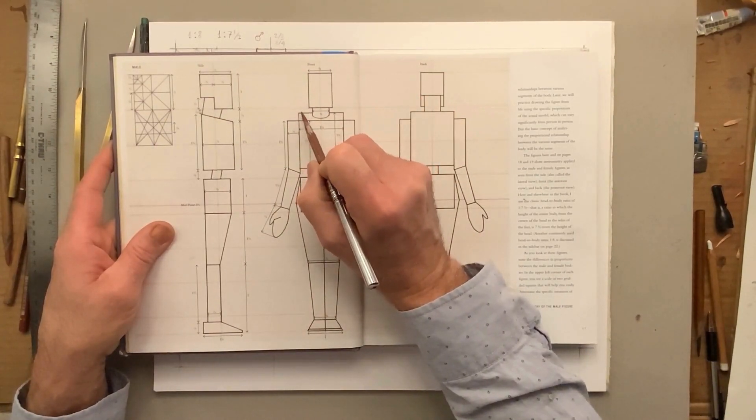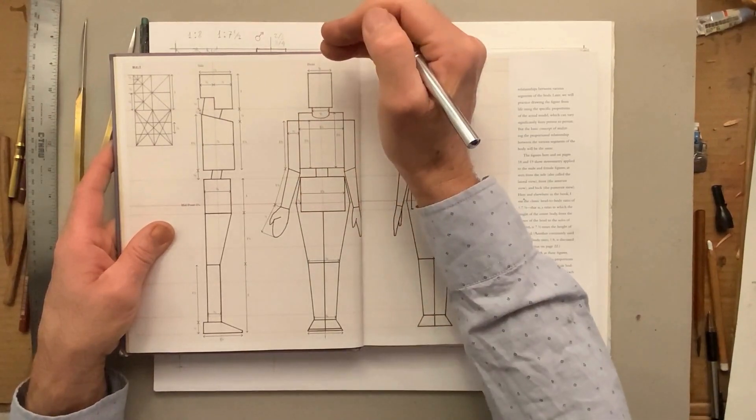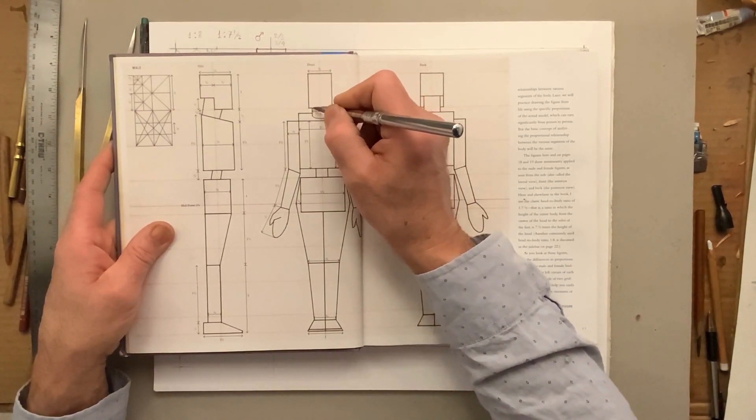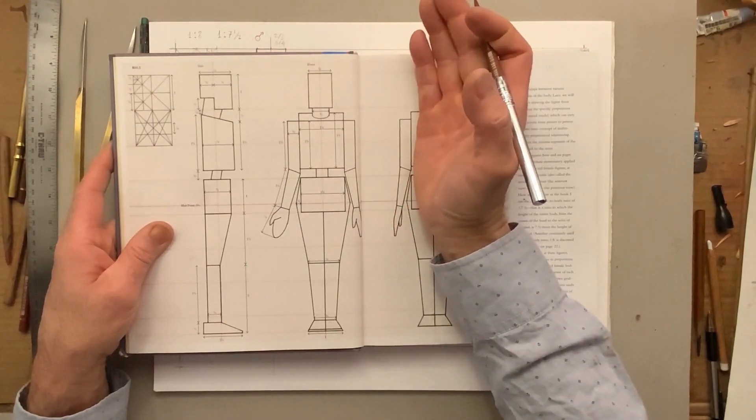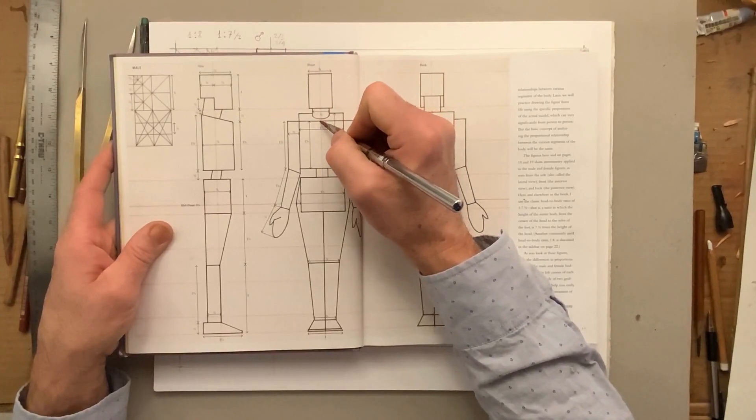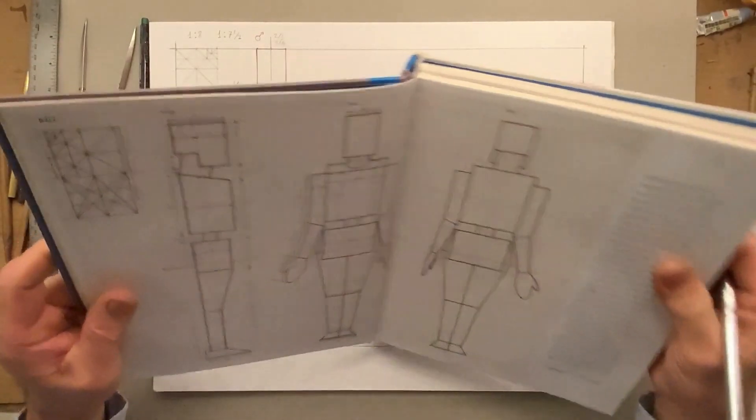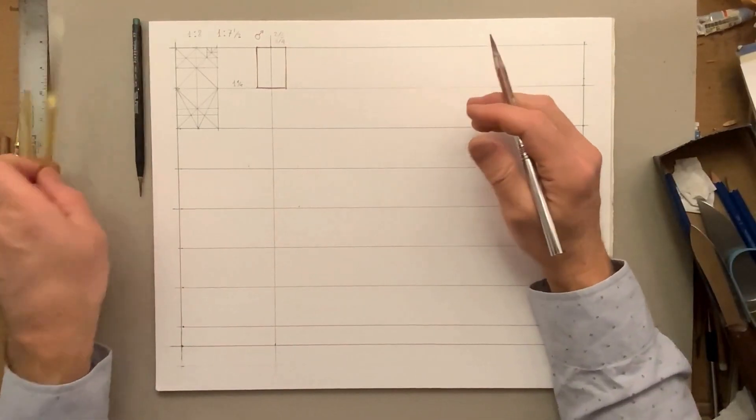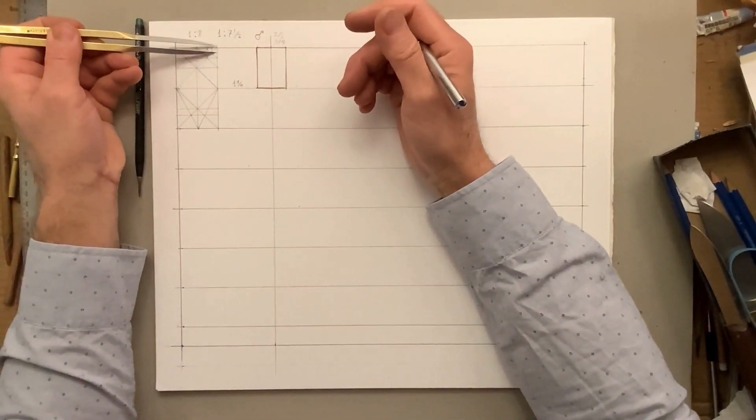When I draw this measurement here, the highest is the back of the rib cage. The space between the chin and the back of the rib cage is about one-eighth - it's small, one-eighth of the head. The front is about one-third. So I can measure this - one-eighth.